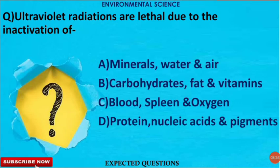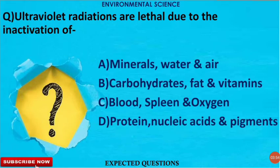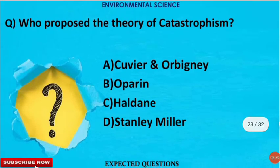The next question is: ultraviolet radiations are lethal due to the inactivation of each of the following — which is the correct option? UV rays are lethal, and you should know why. The correct option is D. UV radiation breaks our DNA and damages and inactivates proteins, nucleic acids, and pigments found in our body, which is why they are lethal in nature.